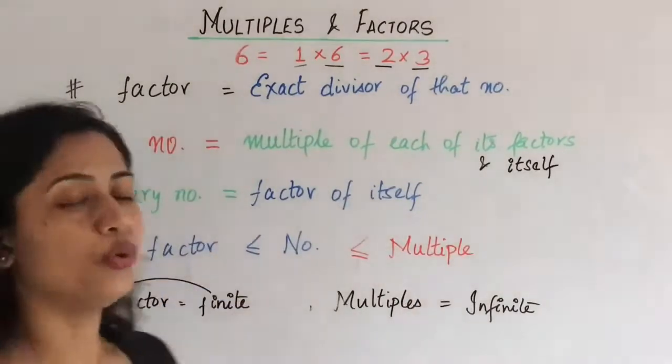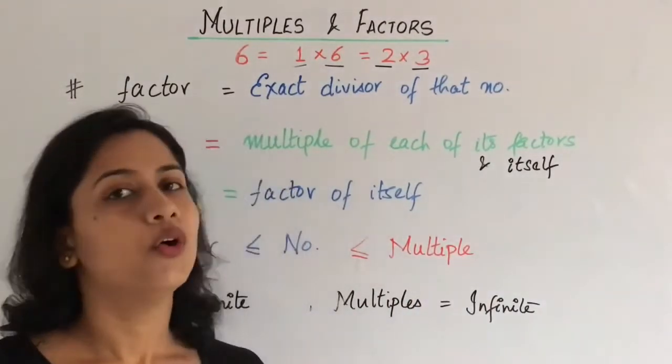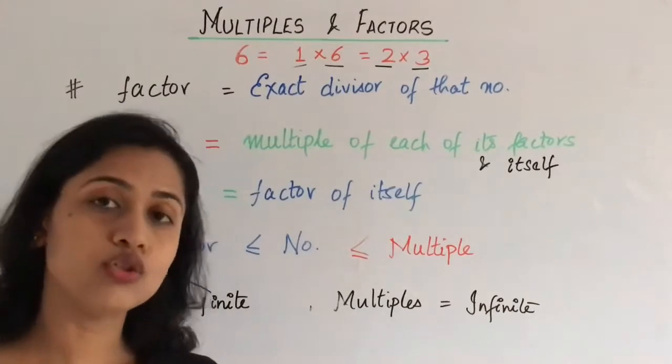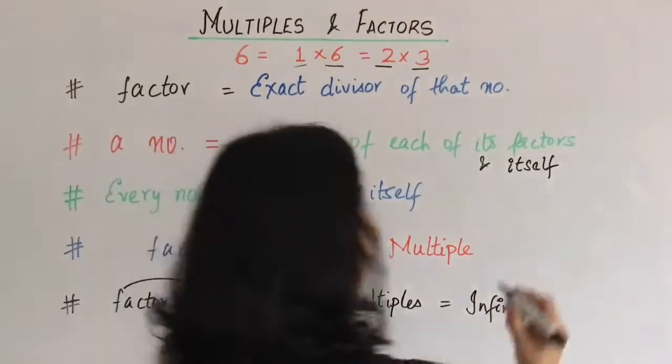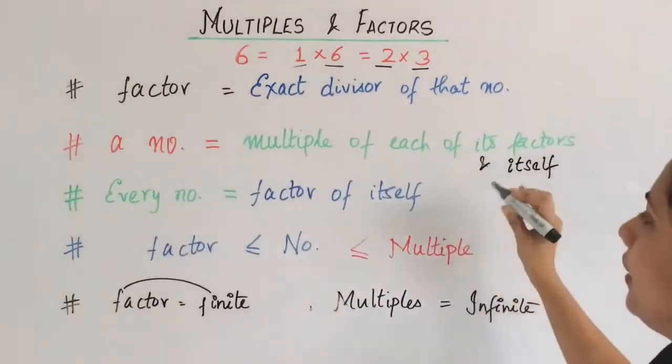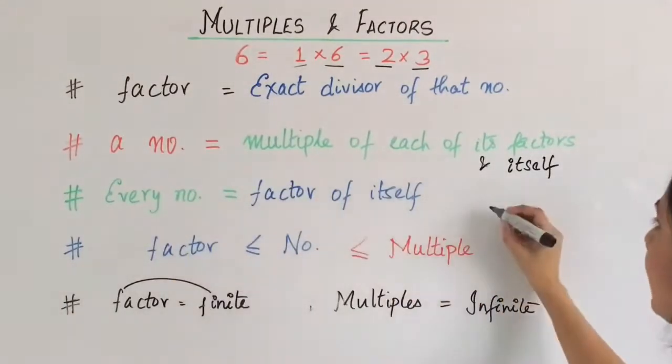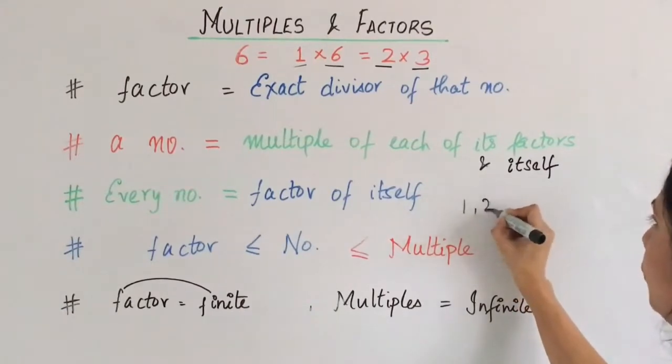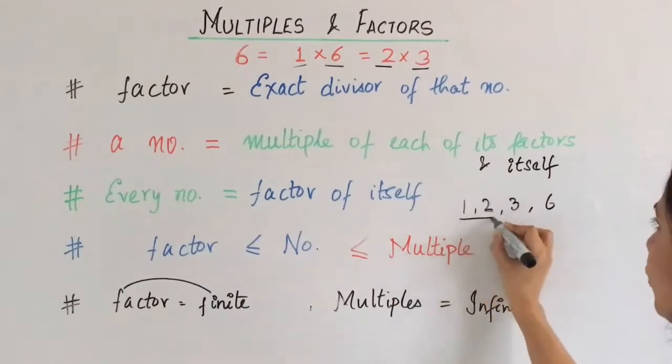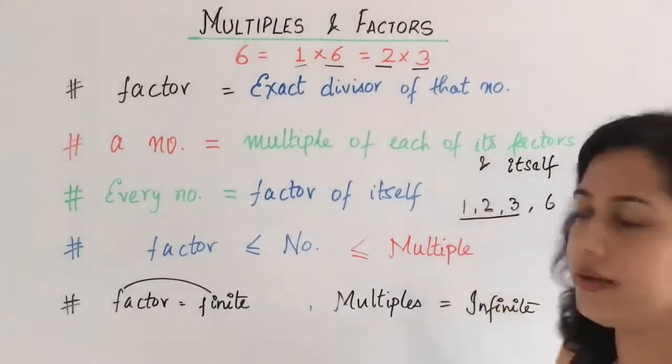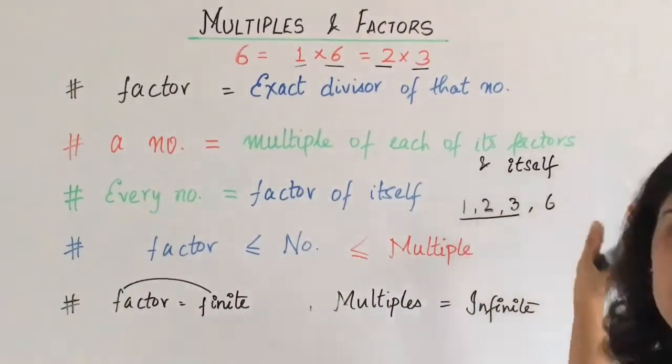The next property: the value of a factor is less than or equal to that number. Let us see this particular thing. Yadhi hum leke chalte hai, number 6, its all factors hai: 1, 2, 3, and 6.